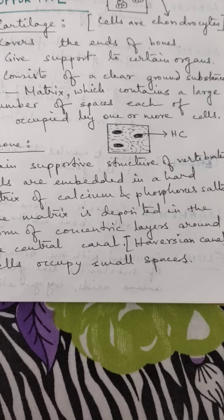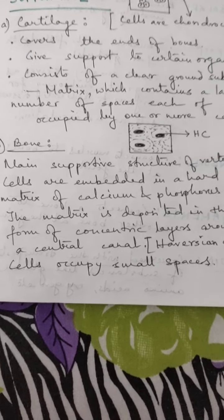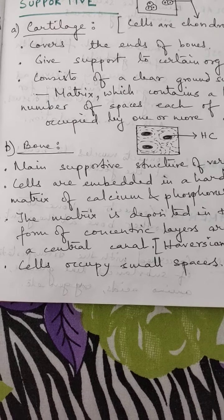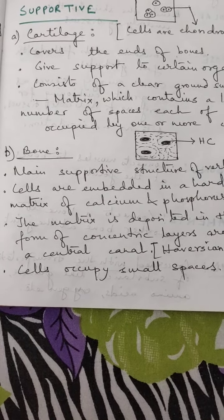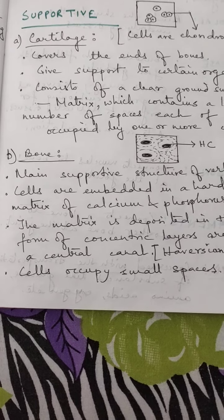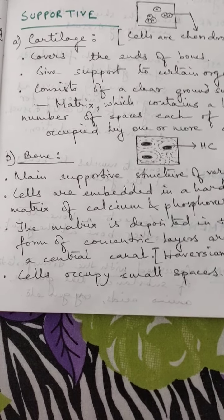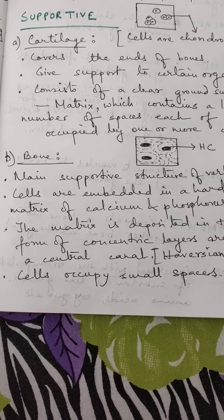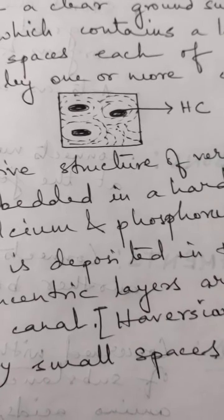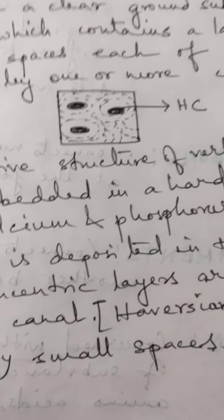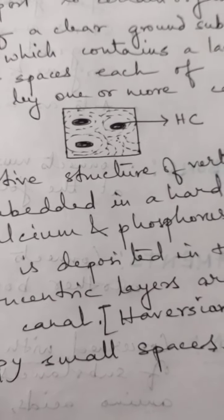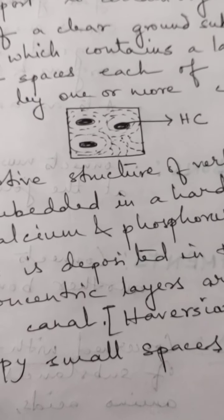The haversian canal is very specific particularly for bone, and cells occupy small spaces. We always hear that we have to take proper calcium and phosphorus food so that we get stronger bones — definitely because the cells are embedded inside the salts of calcium and phosphorus matrix. The matrix is deposited in the form of concentric layers. In this diagram, the black structures are the haversian canals, and around them you can see the dotted concentric rings or concentric layers — that is how the matrix is arranged in the cross section of a bone.